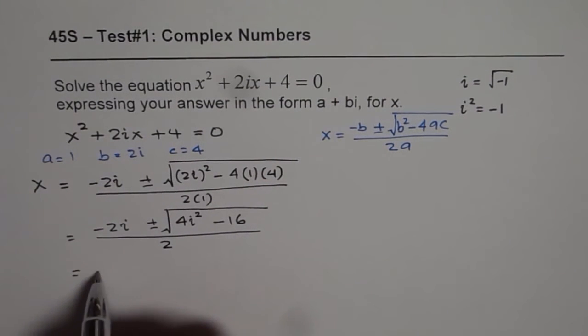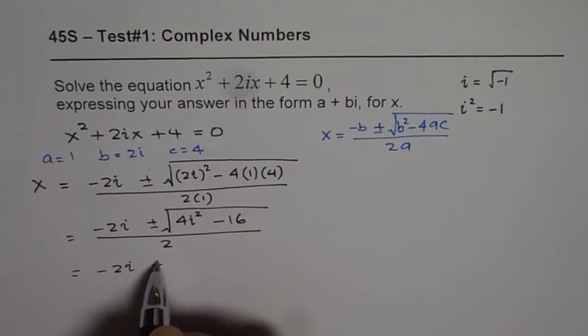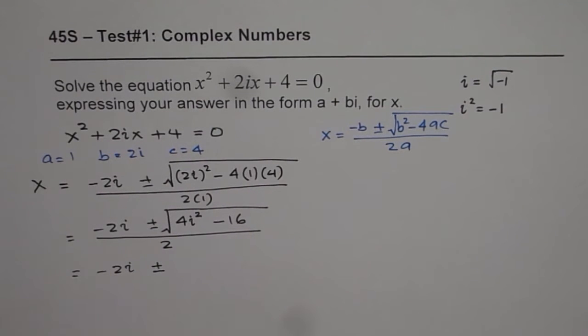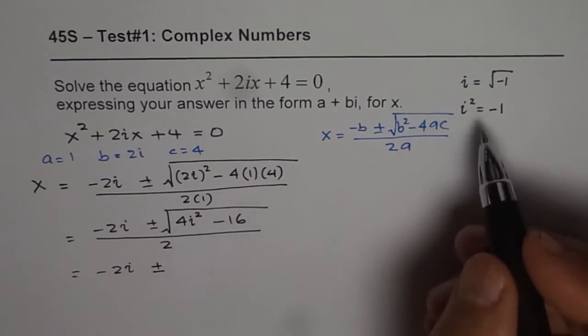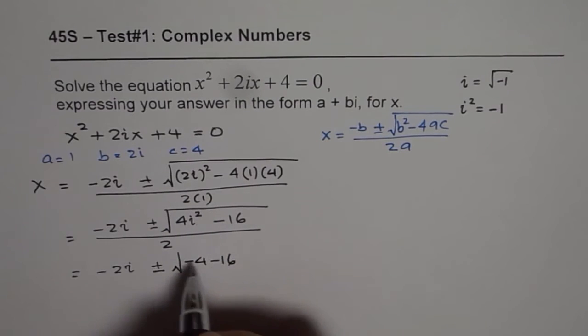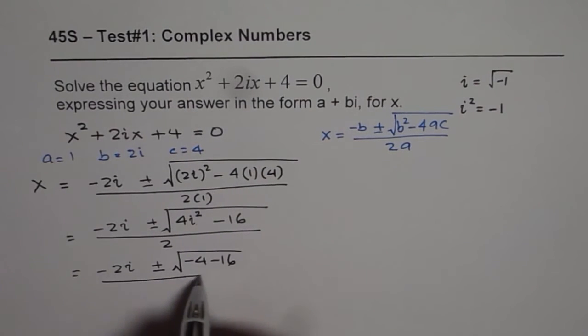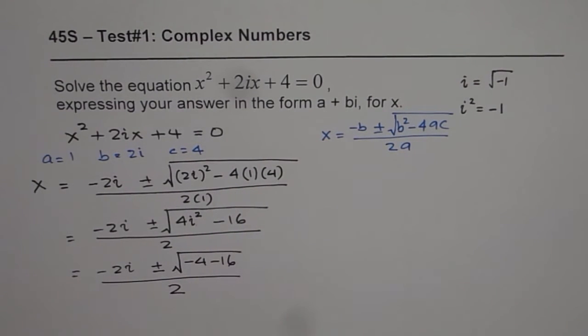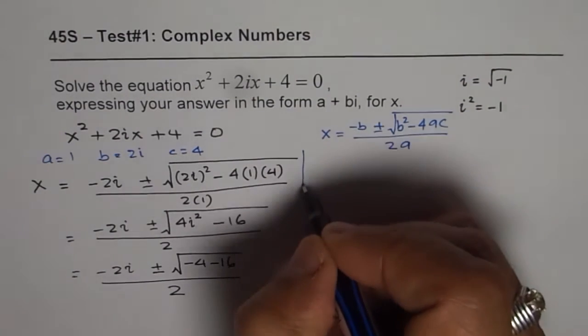Now that gives us minus 2i plus or minus. Now what is i squared? i squared is minus 1. So within the square root, what I get is minus 4 minus 16 divided by 2.